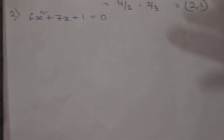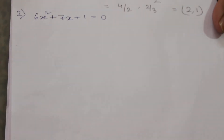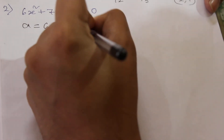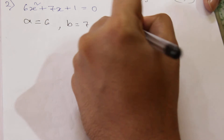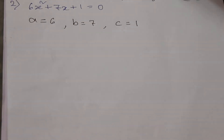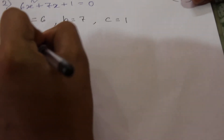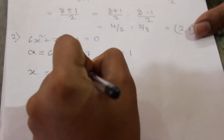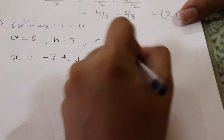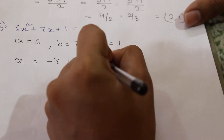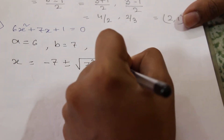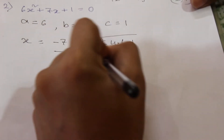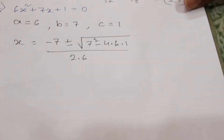Understood. Moving on to our next example: 6x² + 7x + 1 = 0. Here a will be equal to 6, b equal to 7, and c equal to 1. We will apply this formula: x = (−b ± √(b²−4ac)) / 2a, that is (−7 ± √(7²− 4×6×1)) / (2×6).